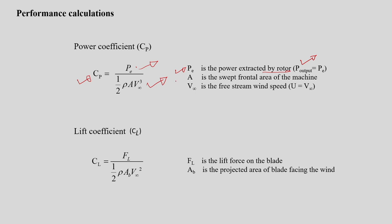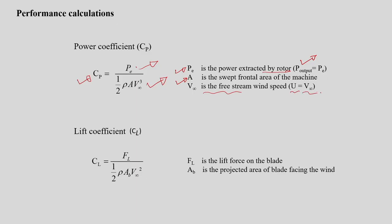A is the swept frontal area of the machine, that is the face area of the rotor, and V infinity is the free stream wind speed. In some literature it is represented as capital U and in others as V suffix infinity — both carry the same meaning. You can use either representation while solving examples.